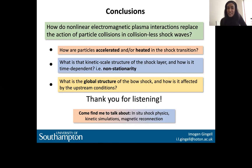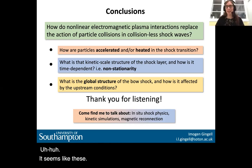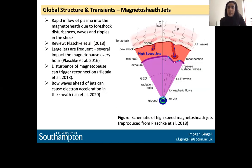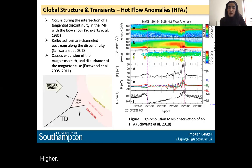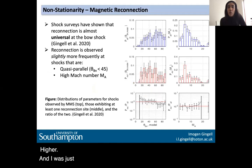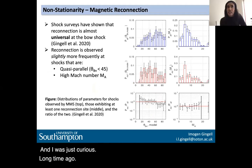I had a quick question: it seems like quasi-parallel shocks are really complex and really interesting. From your long-term survey, perhaps quasi-perpendicular shocks have a slightly higher occurrence probability. What sort of controls the long-term occurrence of quasi-perpendicular compared to quasi-parallel, and are one more likely than the other to occur?